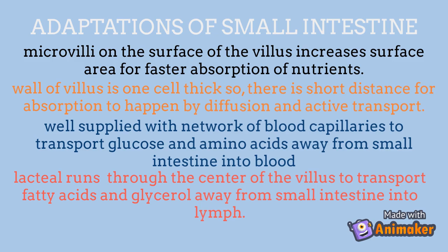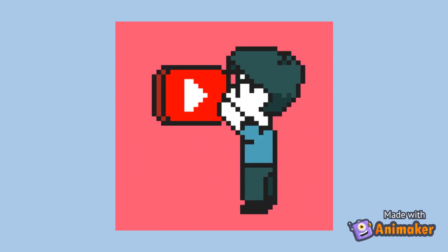The wall of the villi is one cell thick, providing a shorter distance for absorption through diffusion and active transport. The villi are also well supplied with a network of blood capillaries, which transport glucose and amino acids into the blood away from the small intestine. Lacteals run through the centre of the villi to transport fatty acids and glycerol away into the lymph.